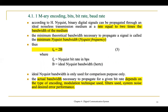The Nyquist rate states that binary digital signals can be propagated through an ideal noiseless transmission medium at a rate equal to two times the bandwidth of the medium, so F equals 2B. This is the minimum Nyquist bandwidth. However, the actual bandwidth needed depends on the type of encoding, modulation technique, filters, system noise, and desired error performance. The Nyquist bandwidth is used for comparison purposes only.